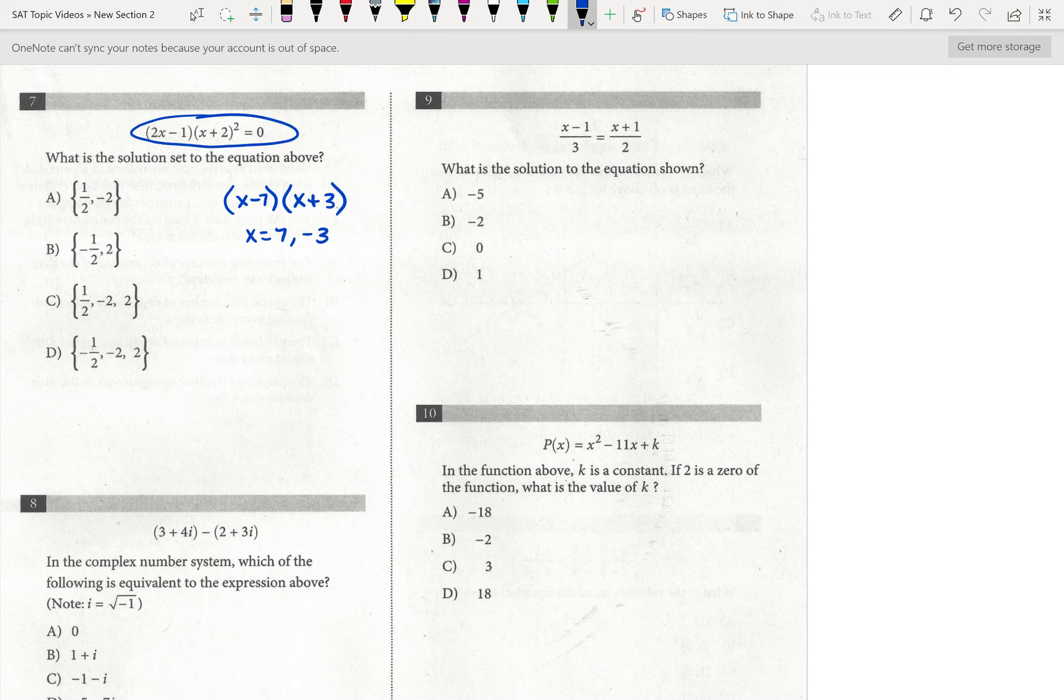Well, notice this is already factored. You don't have to do anything with it other than set this and this equal to zero and solve for x. So ultimately, we're going to get 2x minus 1 equals zero, and we're going to get x plus 2 equals zero.